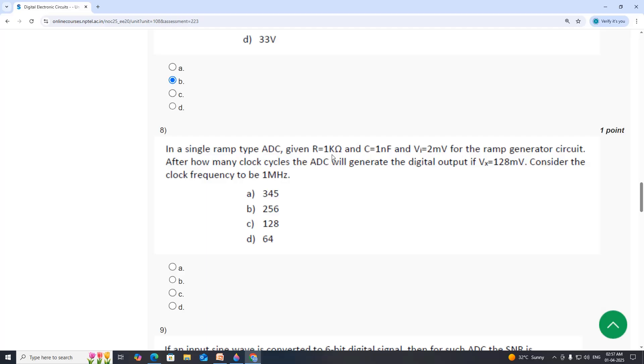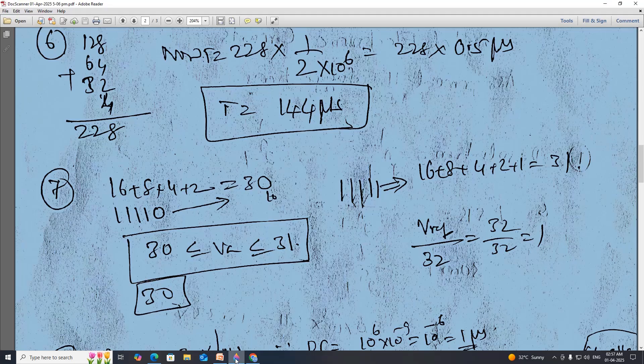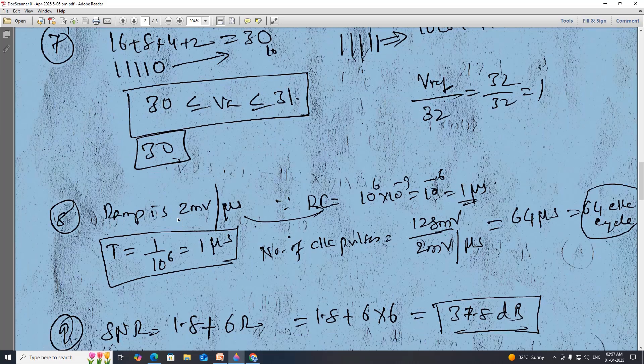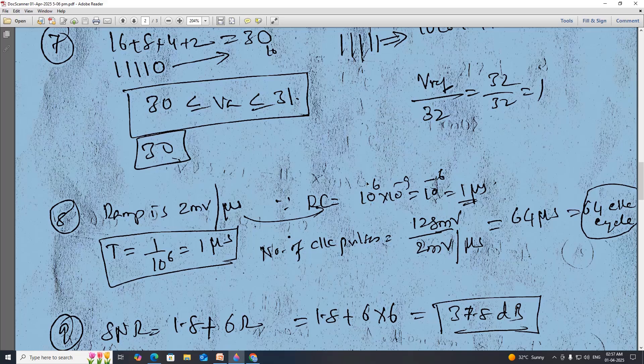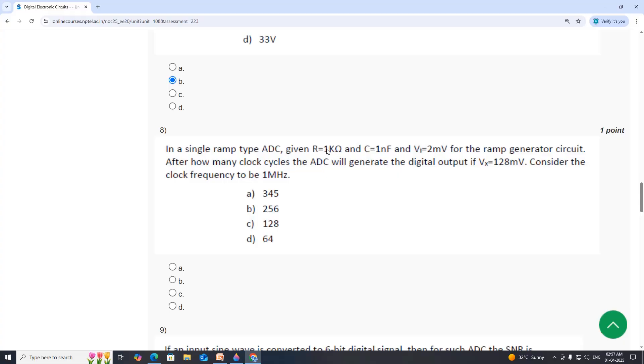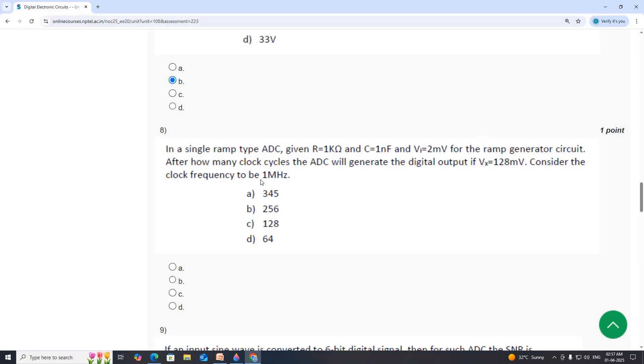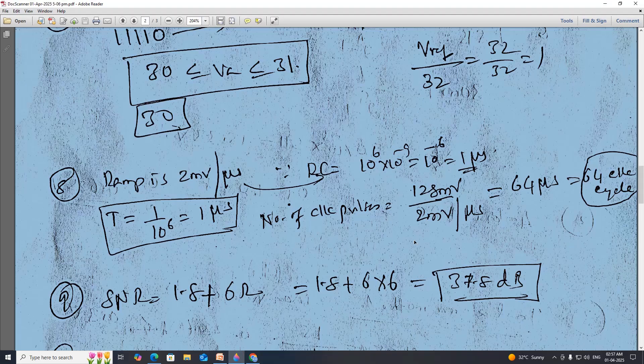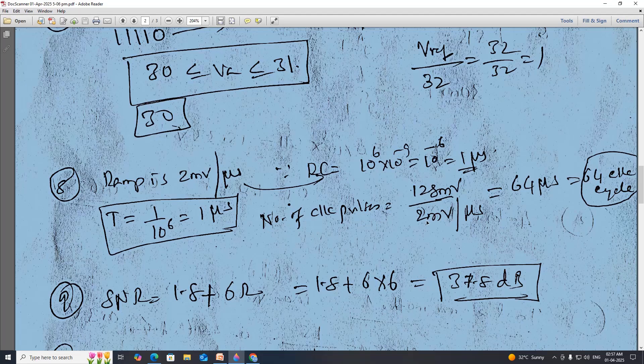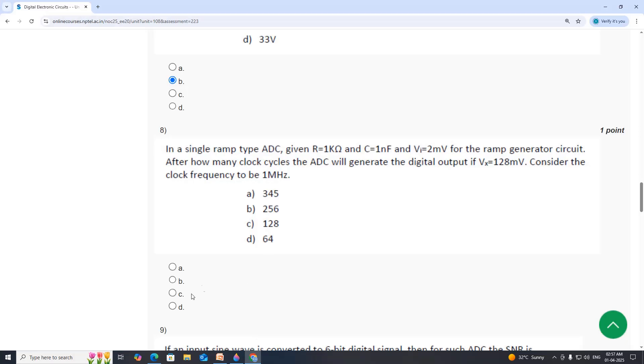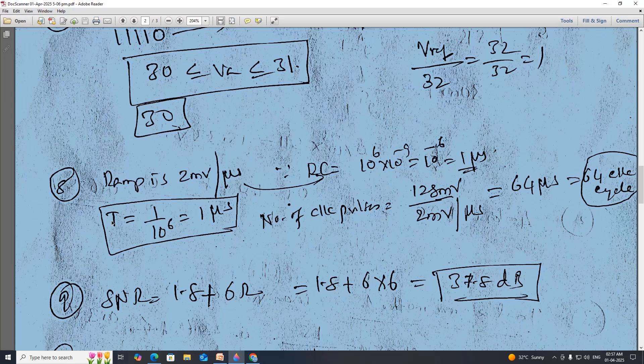In a single ramp type ADC, given R equal to 1 kilo ohms, C equal to 1 nano farad, VI equal to 2 millivolt, VX is 120 millivolt, clock frequency is 1 megahertz. So T equal to 1 divided by 10 power 6, which is 1 microsecond. Number of clock cycles is equal to 128 millivolt divided by 2 millivolt, which is 64 microseconds, which is equal to 64 clock cycles. Because 1T equal to 1 microsecond.